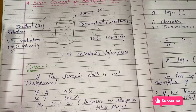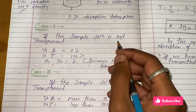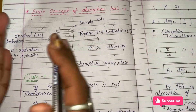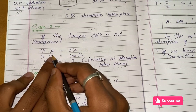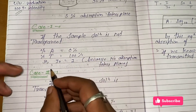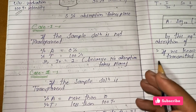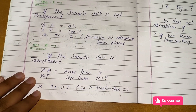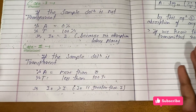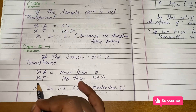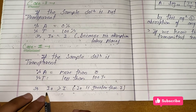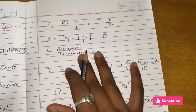Now let's see two case studies. Case 1: if the sample solution is not transparent — meaning our sample has some drug content and is not transparent — then zero percent absorption occurs and transmittance is 100%. So I₀ equals I, because no absorption takes place. Case 2: if the sample is completely transparent with no resistance to light, then the percentage of absorption is greater than zero and transmittance is less than 100%, represented as I₀ greater than I.